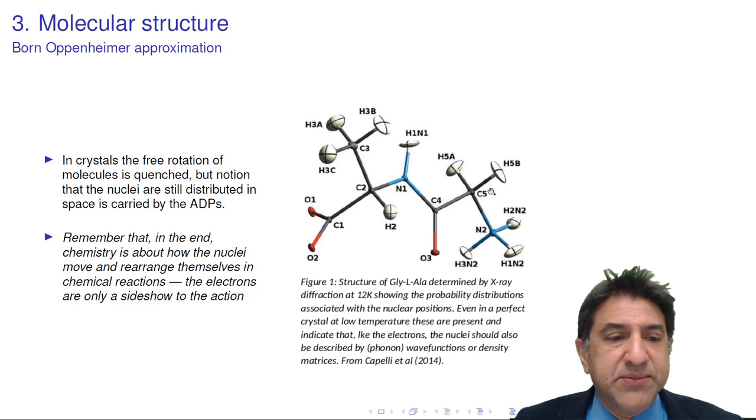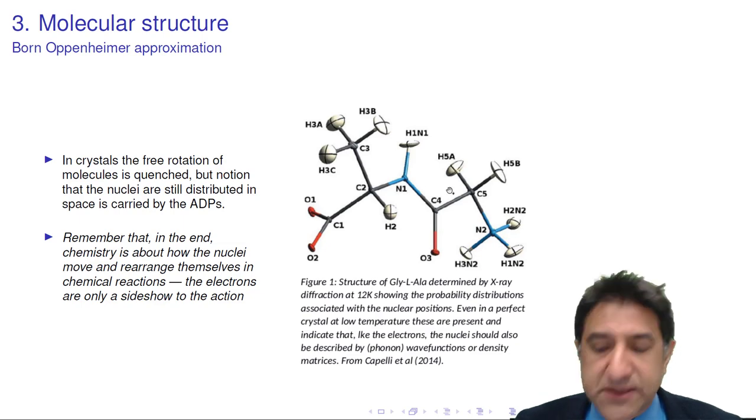So there we have it. But you have to remember, in the end, we're going to be dealing a lot with electrons in this course. In the end, chemistry is about how these nuclei move, how they break and form bonds, and rearrange themselves in chemical reactions. That's where chemistry is. What we're going to talk about is how the electrons behave. We're not going to talk about the nuclei at all.